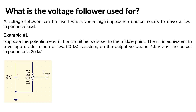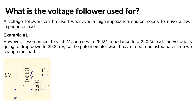In our first example, we have a potentiometer of 100 kΩ that is connected to a 9V battery. The potentiometer allows us to adjust the voltage anywhere between 0 and 9V. Suppose that we set the knob to the middle point — then the potentiometer is equivalent to a voltage divider made of two 50 kΩ resistors. The output voltage is 4.5V and the output impedance is 25 kΩ. This is a relatively high impedance.